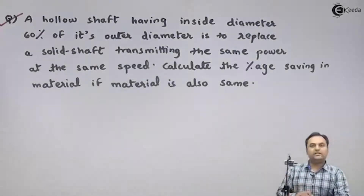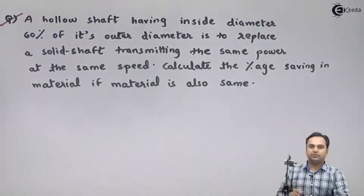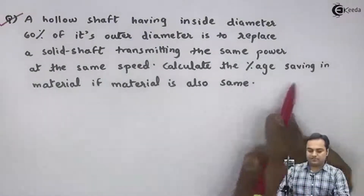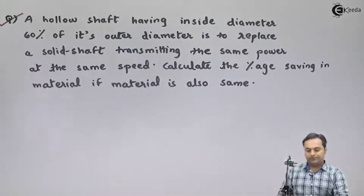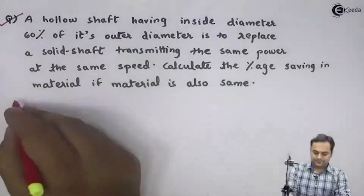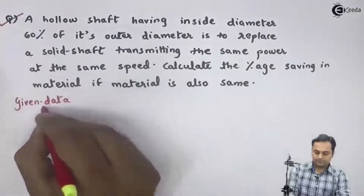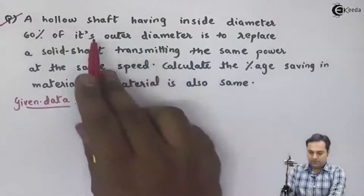Here we are replacing a solid shaft with a hollow shaft. As we know, in a hollow shaft the material used would be less, so we have to find how much is the percentage saving in material. Based on this question, let us first write the data.